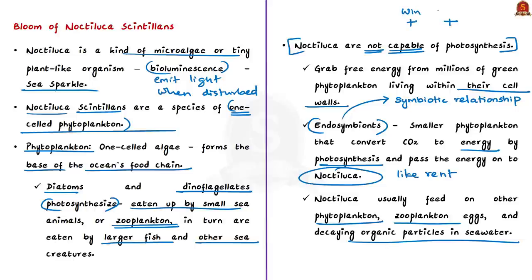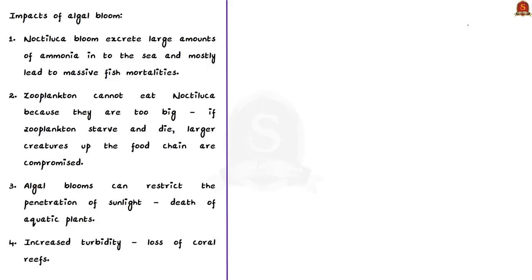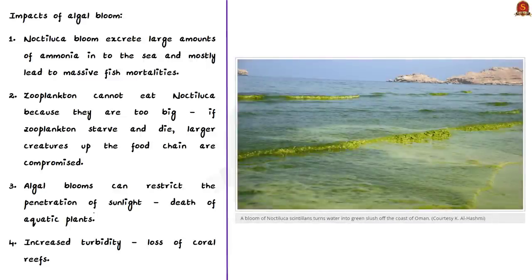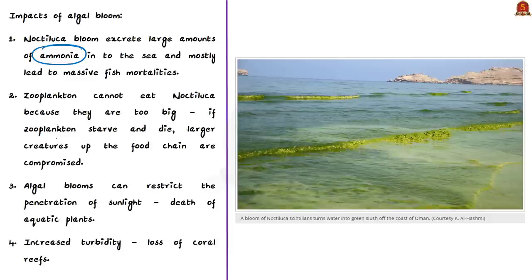Now let's discuss the impact of the bloom of Noctiluca algae. Algal bloom refers to rapid, out-of-control growth of algae, and algal blooms are harmful as they can kill marine animals and disturb ecology — these are called harmful algal blooms. Noctiluca excretes ammonia into water, so during their bloom they excrete large amounts of ammonia into the sea, mostly leading to massive fish mortalities.